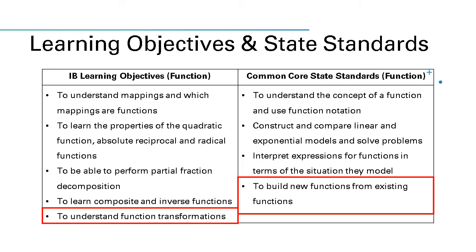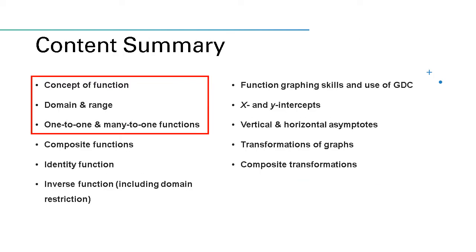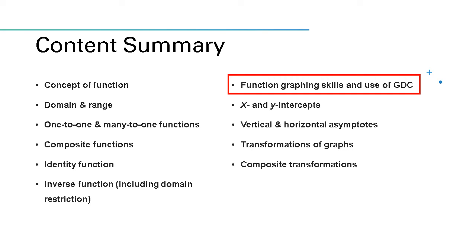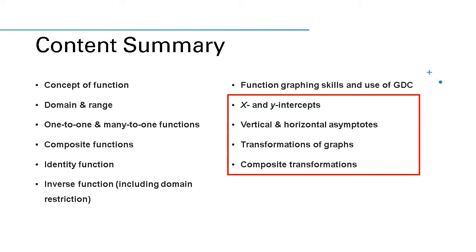The last learning objective is about understanding how a function can change depending on the variables or constants. Here are some of the contents to be taught in class: the first box covers definitions and characteristics; the second covers composite functions and inverse functions; and the third is about using graphic display calculators to visually represent formulas and function equations, including x-intercepts, y-intercepts, and vertical and horizontal asymptotes.